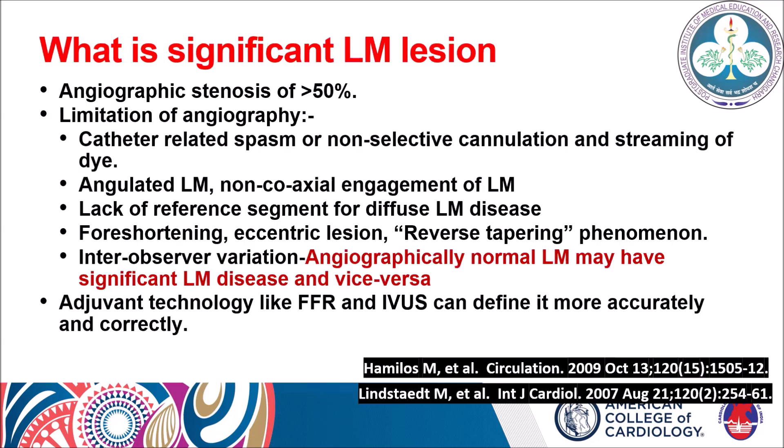Which left main lesion is significant? Any angiographic stenosis more than 50% was previously considered a significant left main lesion. But angiographically, there are certain limitations to comment on the severity of the left main, because there can be catheter-related spasm, non-selective cannulation, and streaming of the dye during left main cannulation. There can also be an angulated left main or non-coaxial engagement, which can overestimate the left main disease.